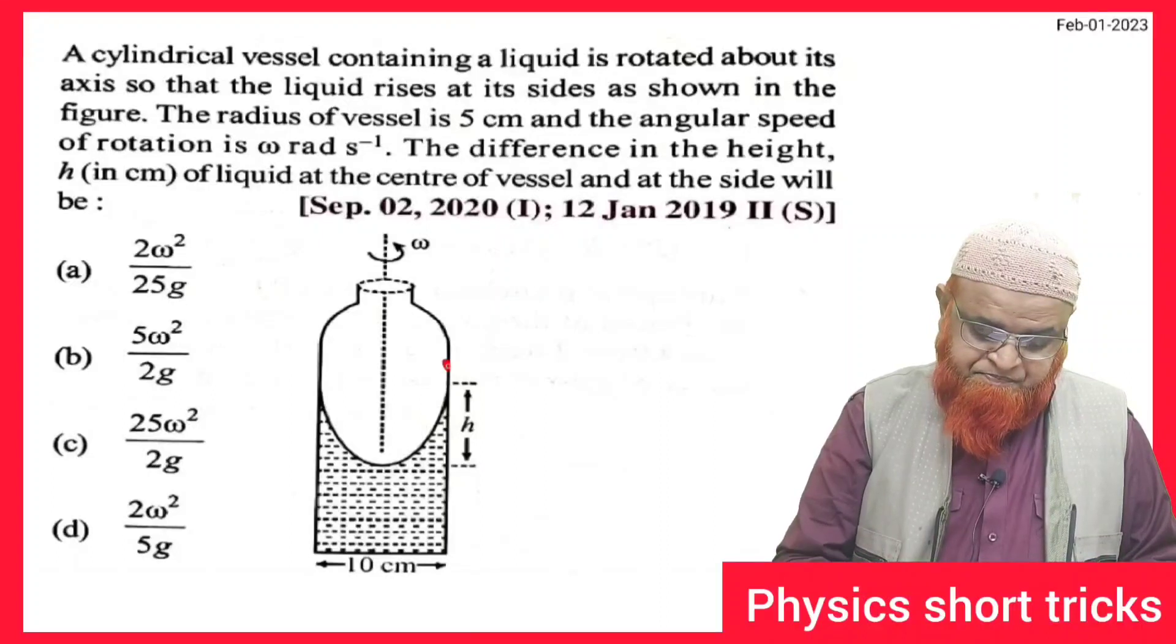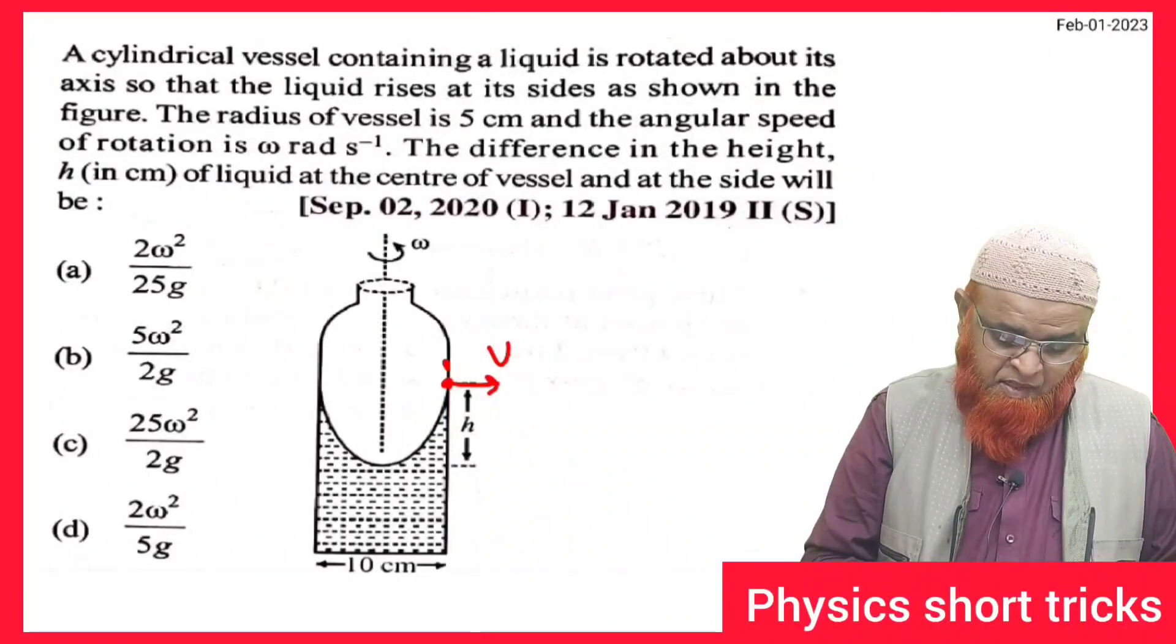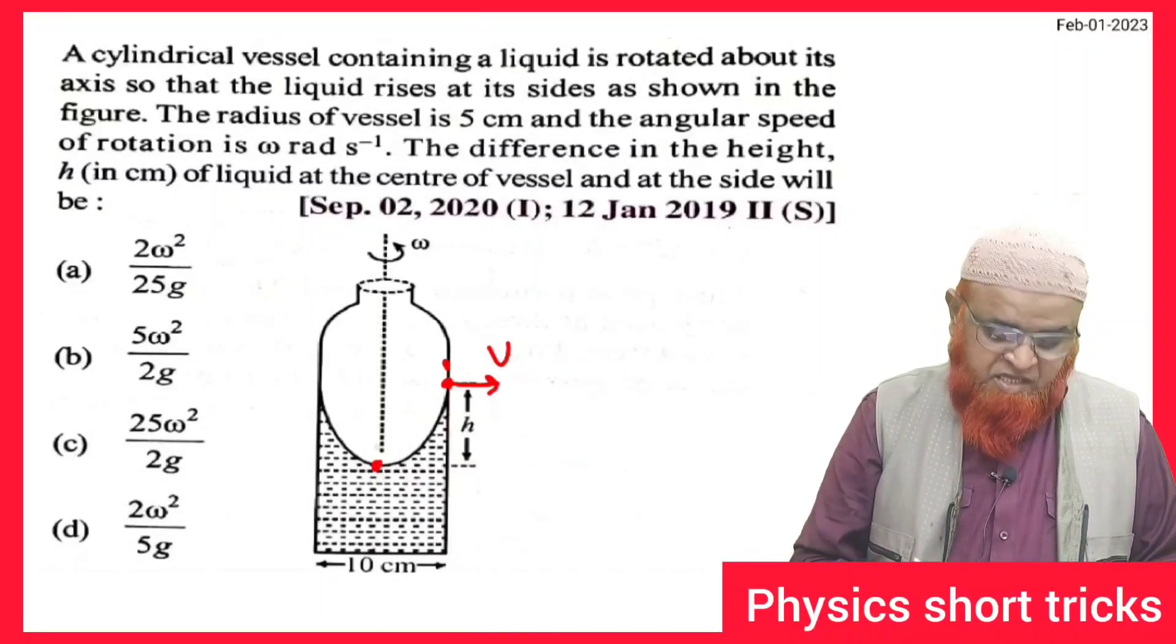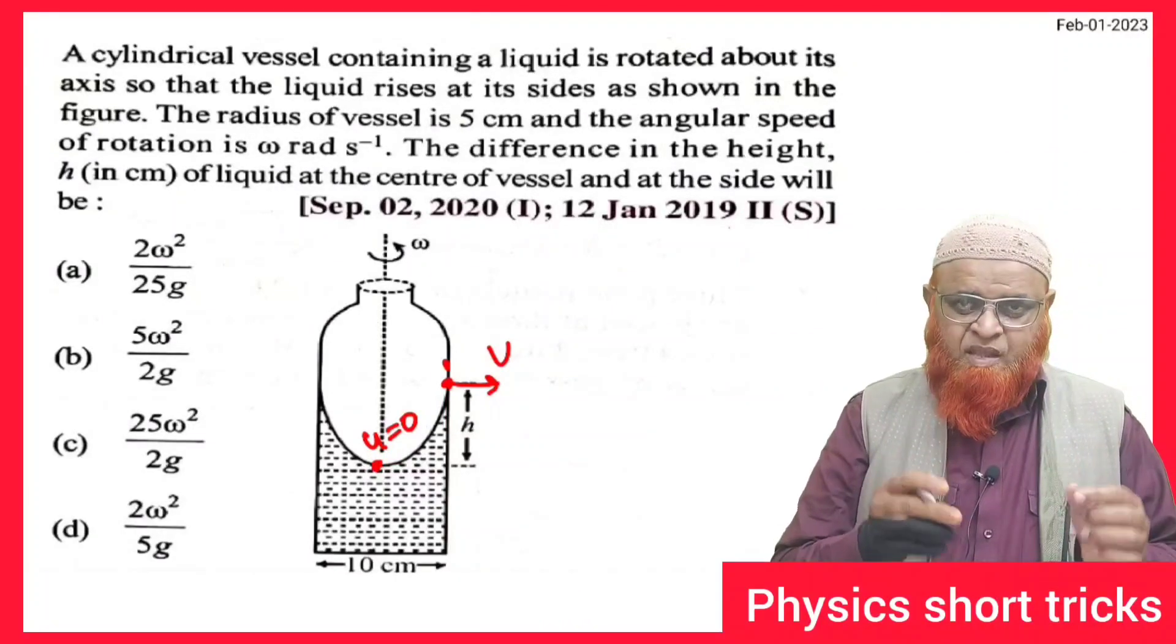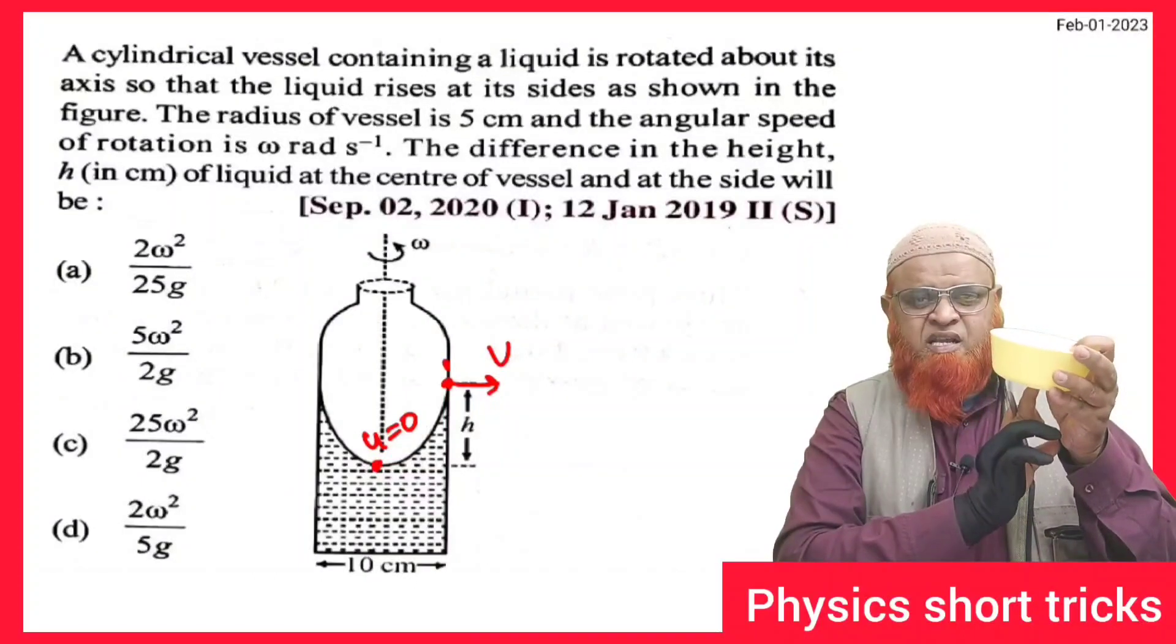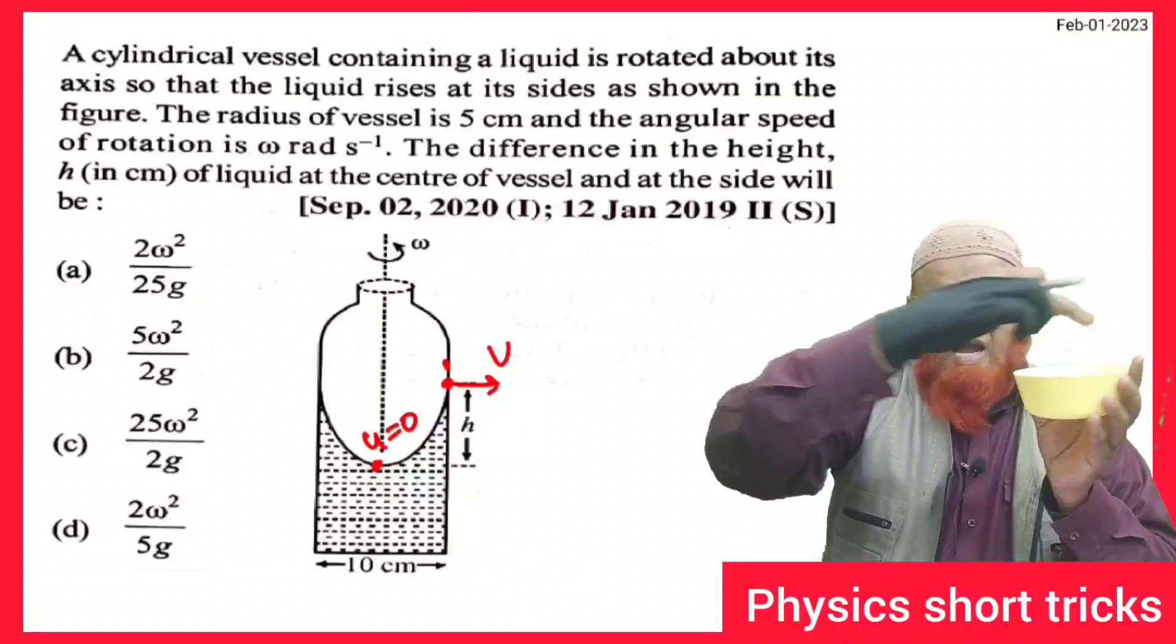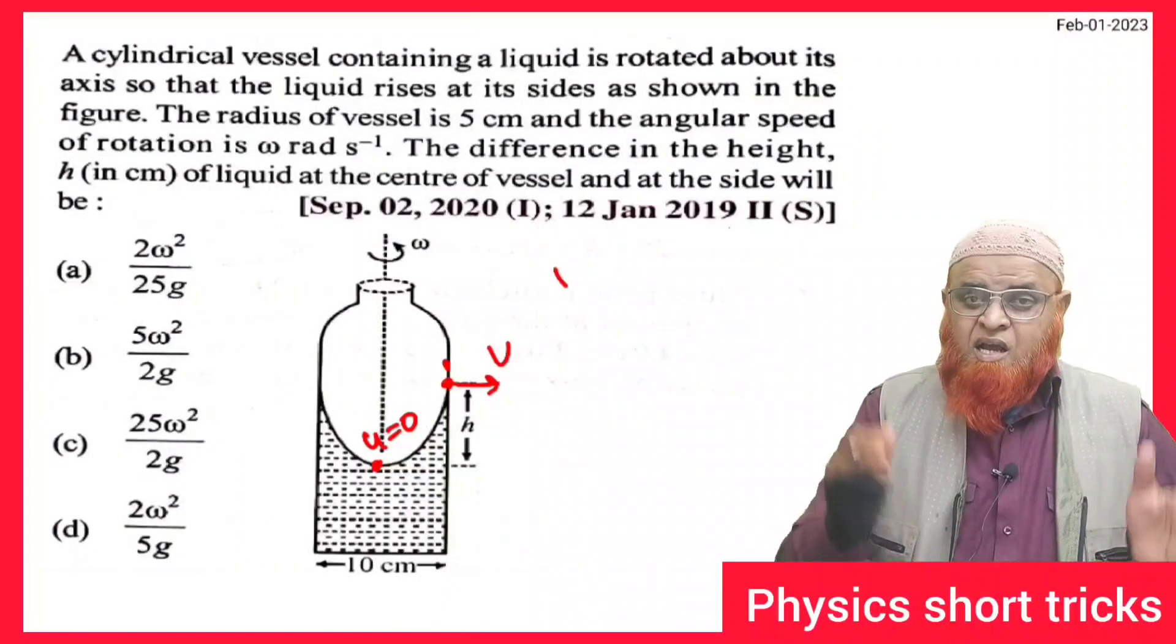At this place, liquid is present and liquid is having certain velocity v. At this place, liquid is present having velocity u which is at rest. As the bowl is rotating, this point is always at rest which is the center, whereas this point is going to rotate like this having maximum velocity.